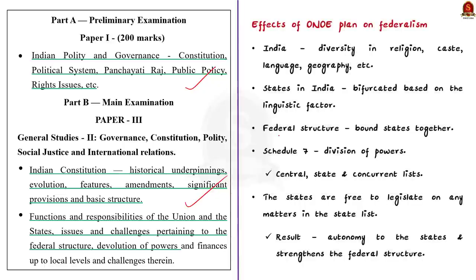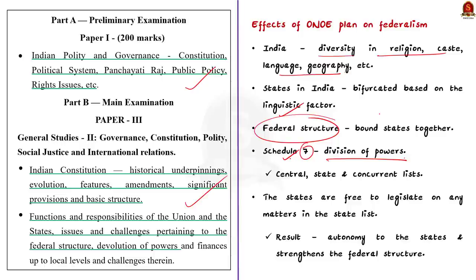As we all know, India is a diverse country with diversity in religion, caste, language, geography and so on. Most of the states in India are bifurcated based on language factor. Despite these differences, India is bound together by a federal structure of government, meaning there is a clear division of powers between central and state governments. This is provided under Schedule 7 of the Indian Constitution, which contains three lists — Central List, State List and Concurrent List. State governments are free to legislate on matters in the State List, which provides autonomy to states and strengthens the federal structure.